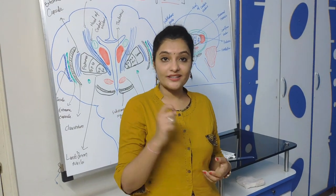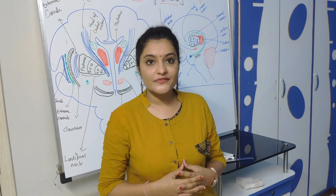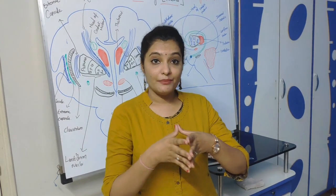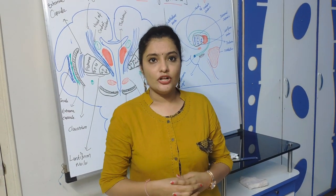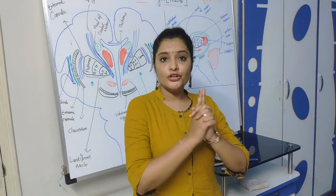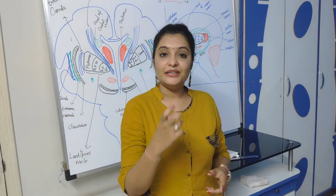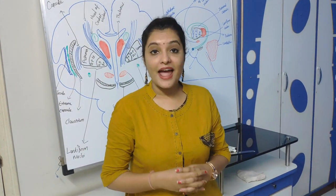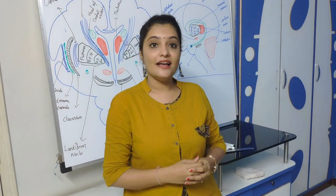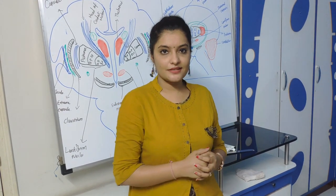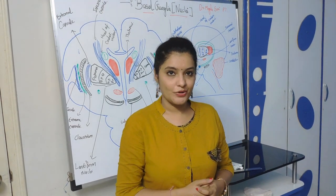What do you mean by nuclei? Nuclei is a collection of cell bodies, and cell bodies are made up of grey matter, and that grey matter is surrounded by white matter. So to make it simple, nuclei are collections of cell bodies surrounded by white matter. The parts of basal ganglia are purely grey matter surrounded by white matter — so we call basal ganglia as basal nuclei. This is the modern concept.